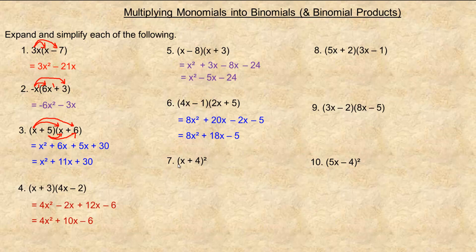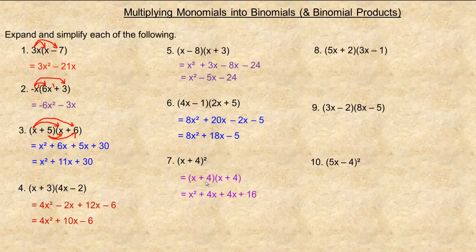Number seven is the square of a binomial. That exponent of two means there are two of these (x plus 4)s multiplied together. So we treat it like the previous problems: x times x is x squared, x times four is 4x, four times x is another 4x, and four times four is 16. Notice when squaring a binomial, those two middle terms are always the same — if they're not, something's wrong. 4x plus 4x is 8x, so the answer is x squared plus 8x plus 16.